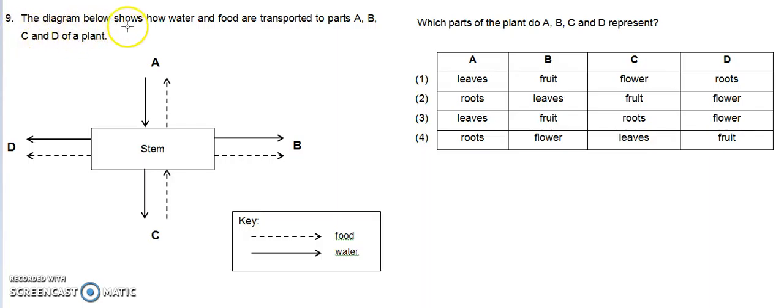Question 9: The diagram below shows how water and food are transported to parts A, B, C, and D of a plant. The question is, which parts of the plant do A, B, C, and D represent?